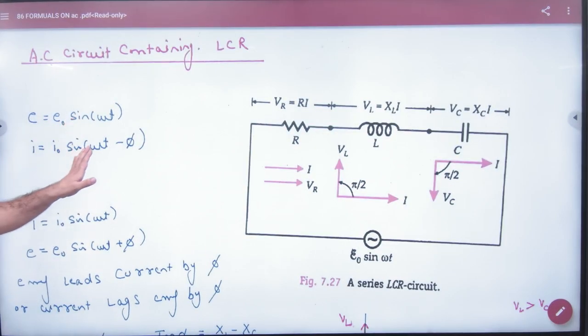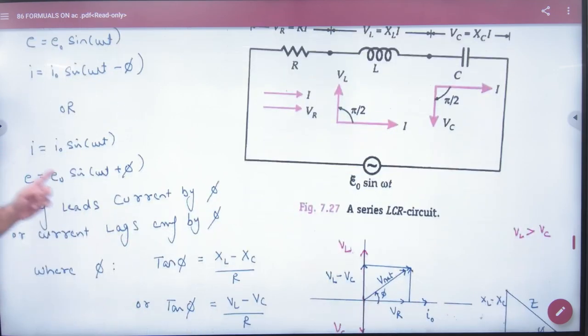EMF lags by an angle of phi, provided VL is greater than VC. We have done this with the assumption that EMF lags by phi. How do we merge?